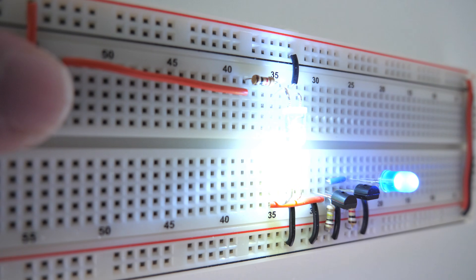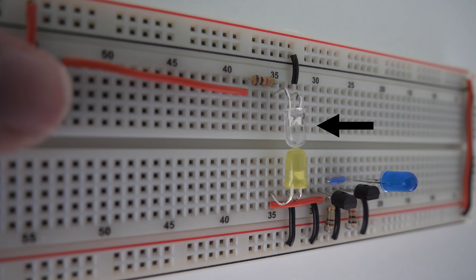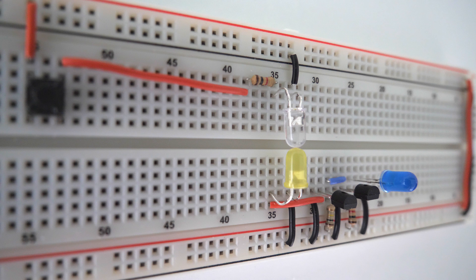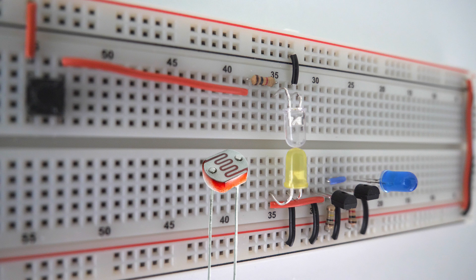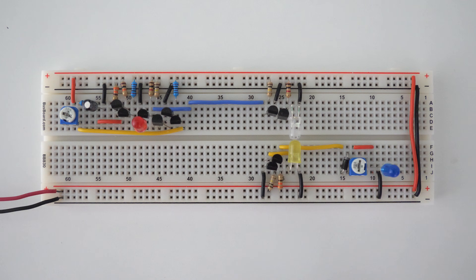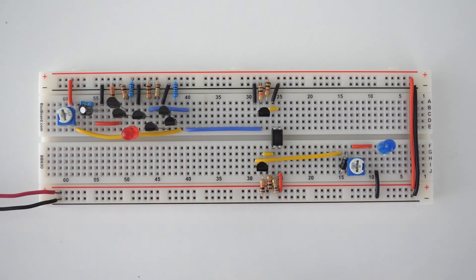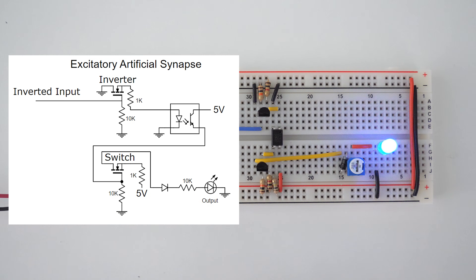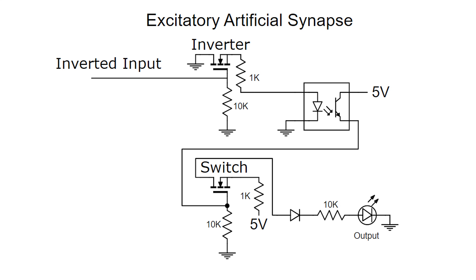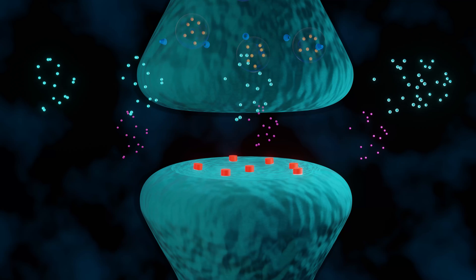An optocoupler can be built many different ways. The transmitting side can be an LED or an infrared LED. The receiving side can be an LED, photodiode, phototransistor, or light-dependent resistor. Since we will be using lots of optocouplers, the easiest way to implement them is with an IC. Within the IC, the optocoupler is built with an infrared LED and a phototransistor. Here is a circuit diagram for making an artificial synapse with an IC optocoupler.